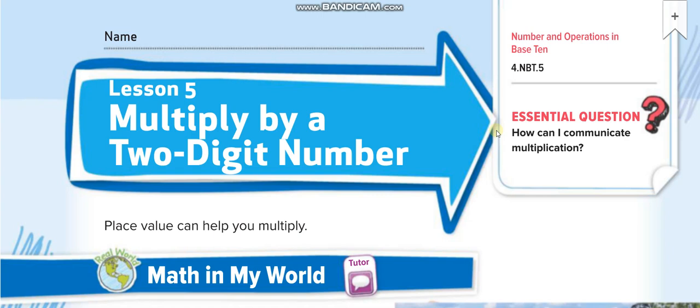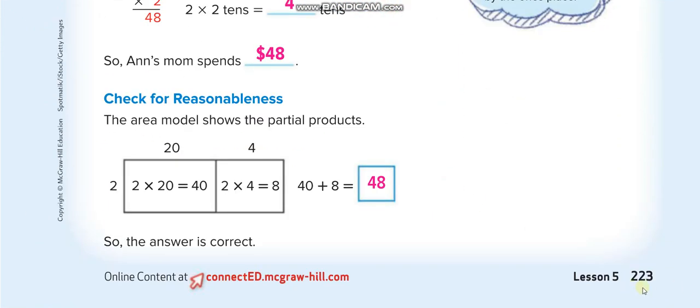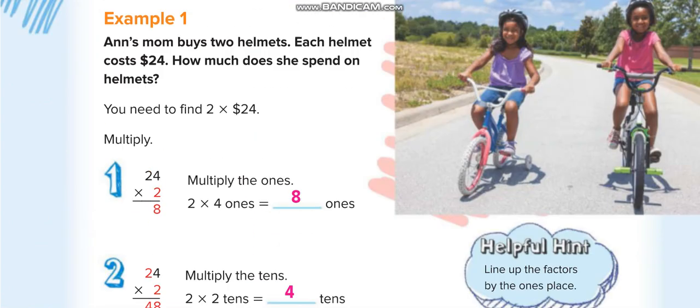Hi everyone, welcome back to my channel Learn Math with Mr. Saad. Today's lesson for grade 4 chapter 4 lesson 5: multiply by a two-digit number, page number is 223.